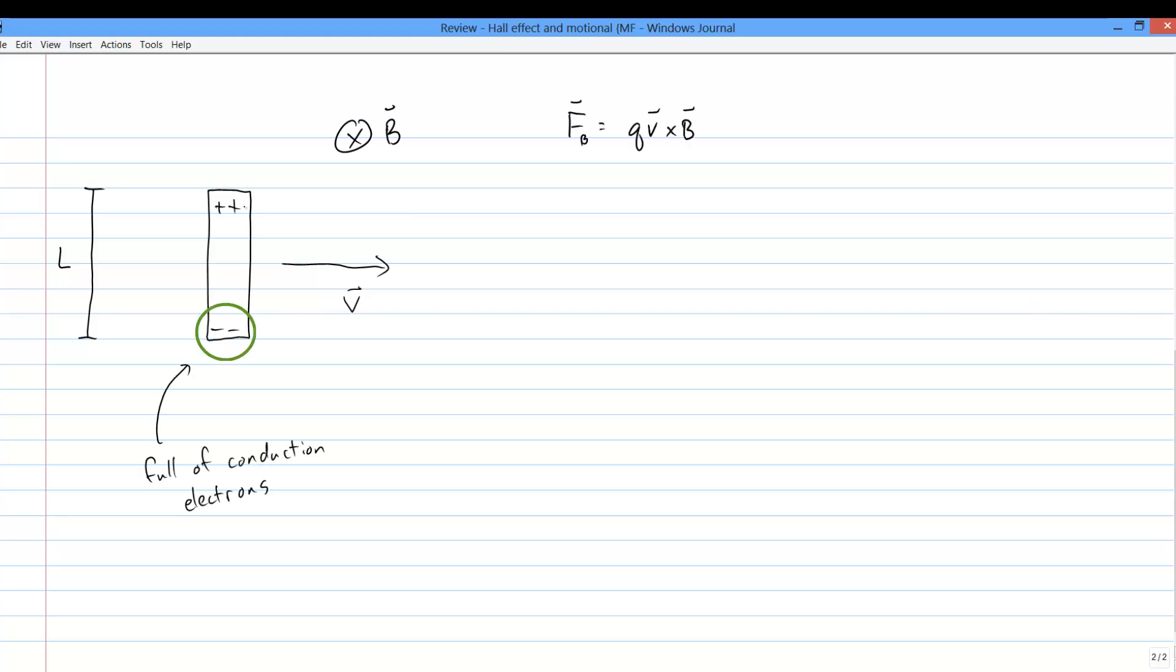The electrons get pushed down to the bottom of the rod, leaving behind positives on top. And the charge separation leads to an electric field. And the electric field leads to a voltage.